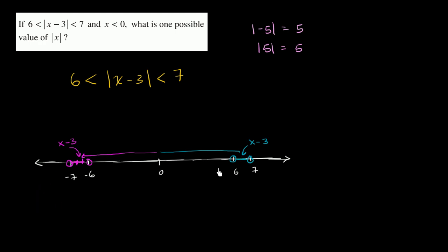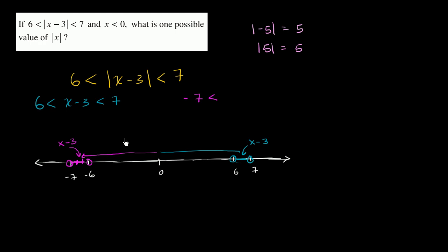So what are the two situations? The first case is simply 6 is less than x minus 3, which is less than 7 — we're assuming x minus 3 is positive. But there's also a case where x minus 3 is negative, and in that case we have negative 7 is less than x minus 3, which is less than negative 6.